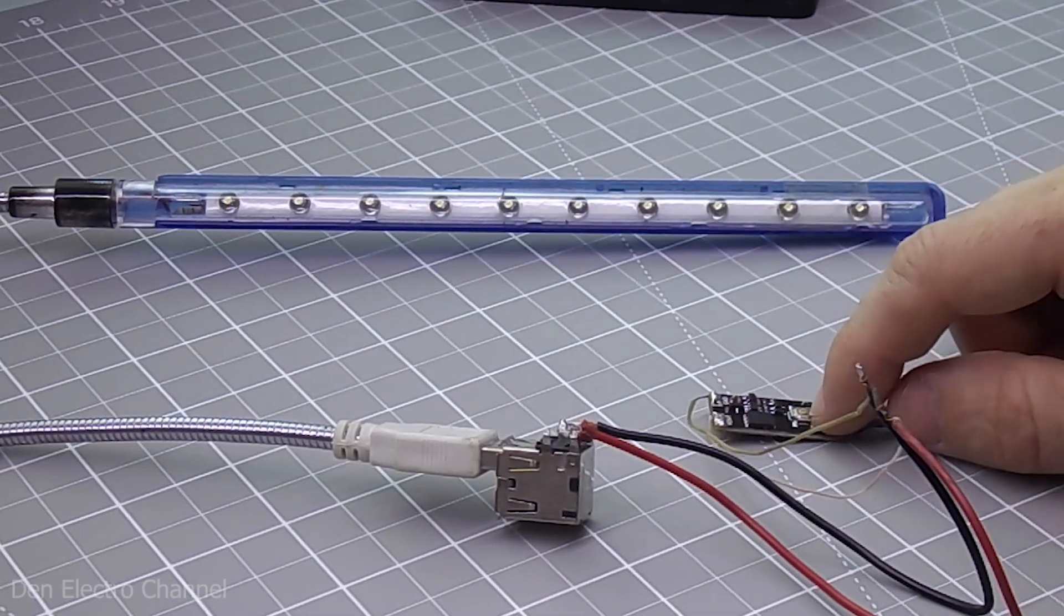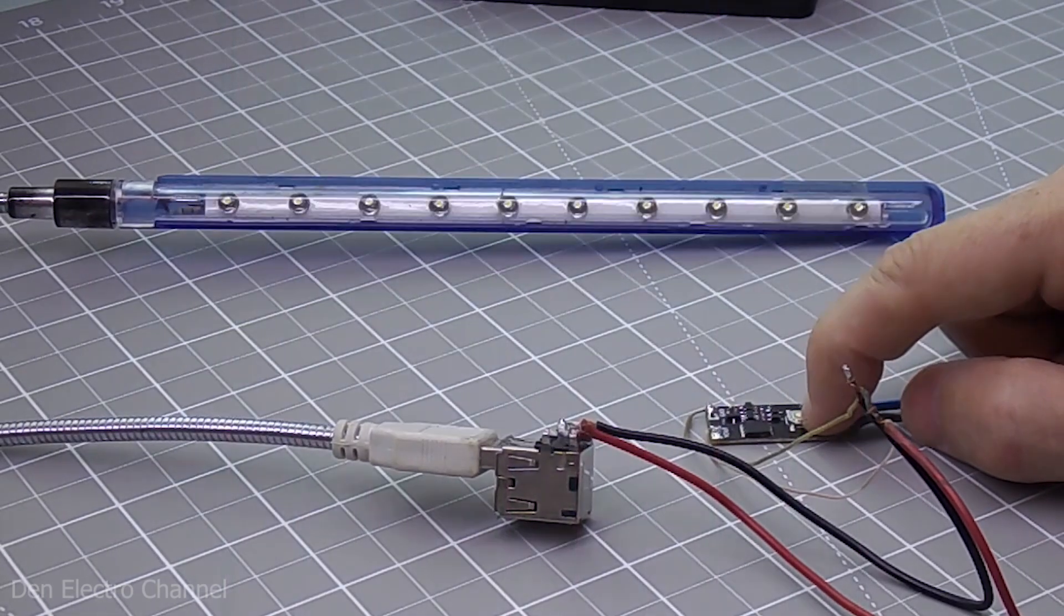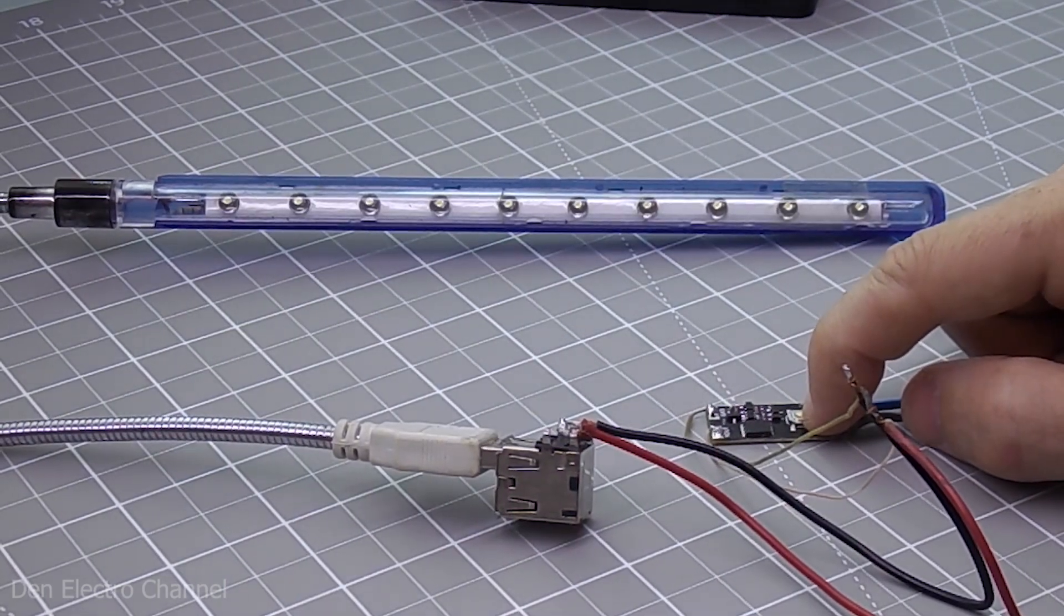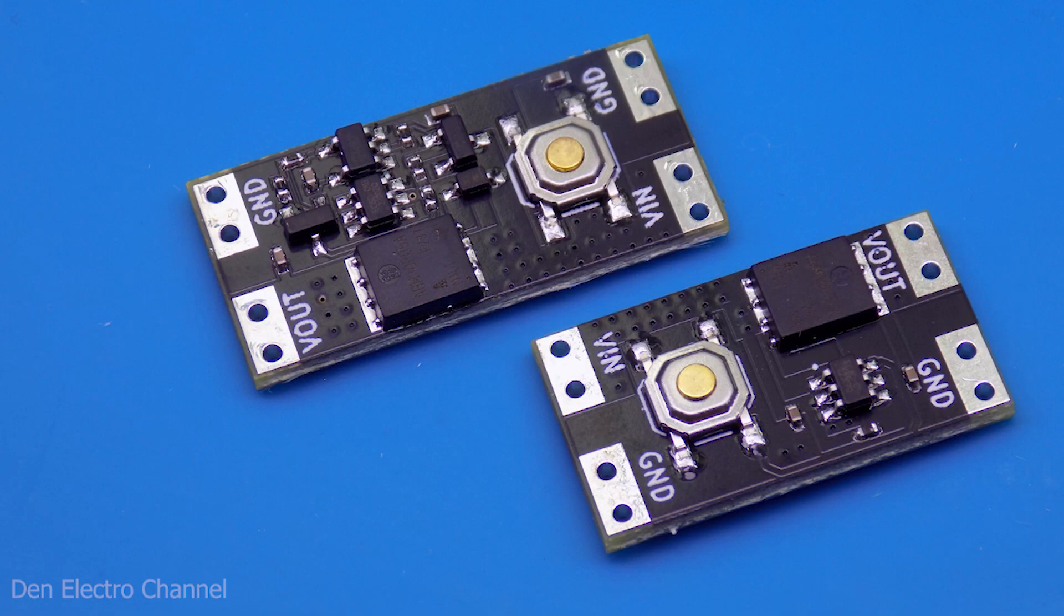These modules can be called Electronic Latching Buttons. With their help, you can turn on and off any device by pressing just one button. I bought the modules on AliExpress, there are two types. I will now tell you what their differences are.